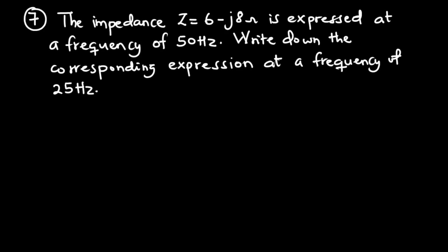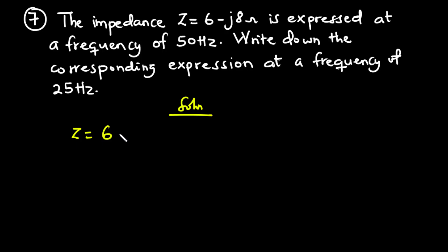Now for question 7: the impedance Z equals 6 minus j8 ohms, expressed at a frequency of 50 hertz. We are asked to write down the corresponding expression at a frequency of 25 hertz. For this circuit, the impedance is 6 minus j8 ohms.